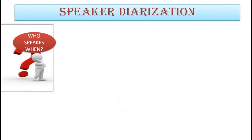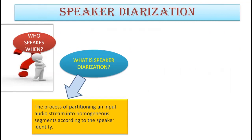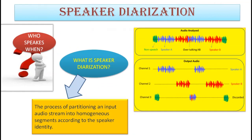First, let's start with speaker diarization. It answers the main question: who speaks when? Speaker diarization is the process of partitioning an input audio stream into homogeneous segments according to speaker identity. The audio analyzed consists of non-speech, speaker A, overlapping speech of A and B, and speaker B. It is divided into output channels — channel 1, channel 2, and channel 3 — on the basis of speakers: speaker A, speaker B, and a discarded one.